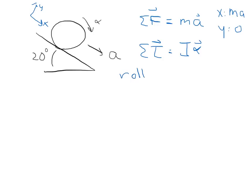It's going to roll without slipping. The fact that it's rolling without slipping means that the linear acceleration is equal to alpha times r. So it's the angular acceleration times the radius.